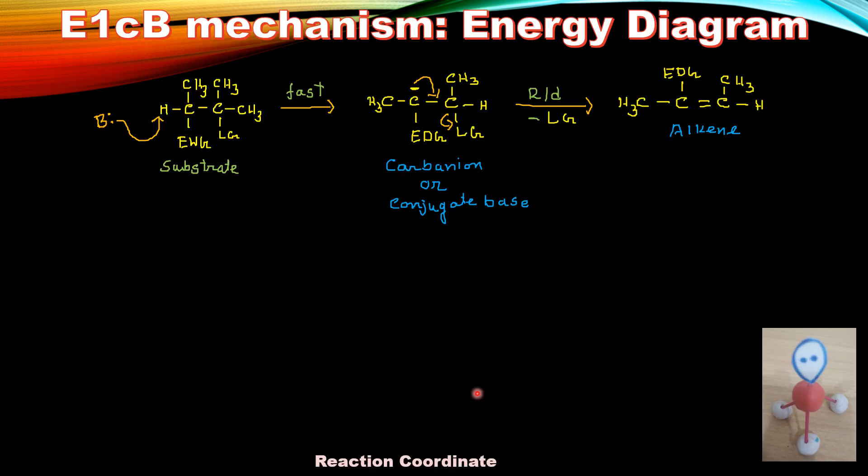Here I am going to explain the energy diagram of the E1CB mechanism. In the E1CB mechanism the last step is the rate determining step or slowest step. In the energy diagram, the y-axis corresponds to energy and the x-axis corresponds to reaction coordinate.